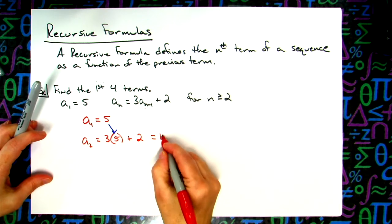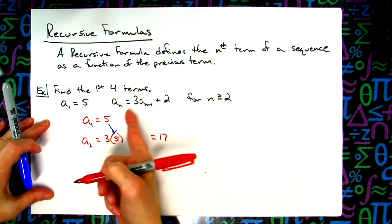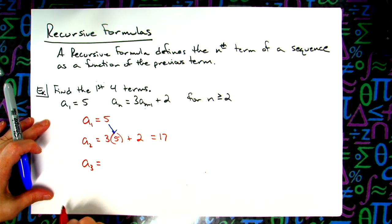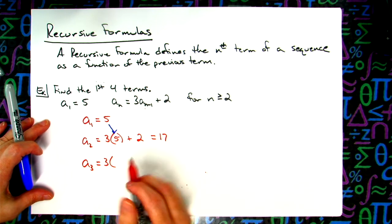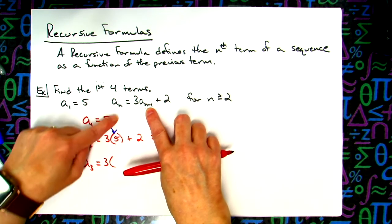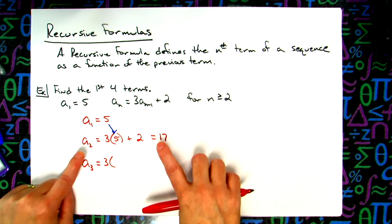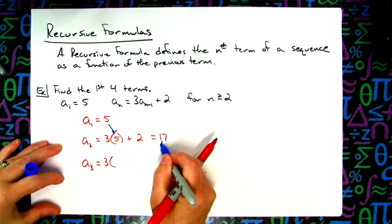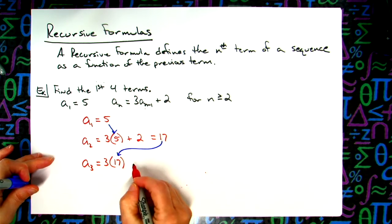5 plus 2 is going to be a 17. So it's always the previous answer, but if you think of what's going on with the n's and those subscripts, it makes sense. A sub 3: I'm going to plug in my formula, 3. Now the number I'm going to put right here—let's take a look at the subscripts. If this is a sub 3, 3 minus 1 is 2, so that's a sub 2. Well, my a sub 2 value is 17, the previous answer. So we're going to take the previous answer, plug that in, and then go ahead and add 2. 17 times 3 plus another 2 would be like a 53.